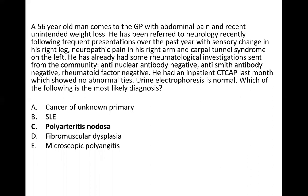Microscopic polyangiitis is not likely because it tends to be associated with ANCA, and you don't really get much abdominal pain with it. Fibromuscular dysplasia is essentially thickening and constriction of arteries causing renal artery stenosis — it's not a true vasculitis per se, just a narrowing of arteries. It also tends to occur in younger women, not a 56-year-old man. So with all that in mind, the diagnosis is polyarteritis nodosa.